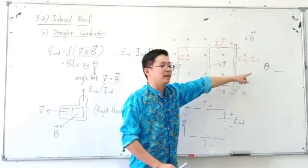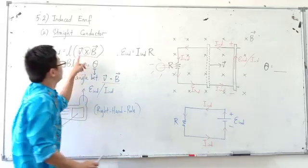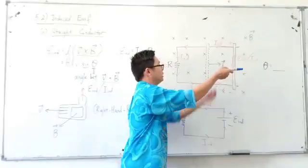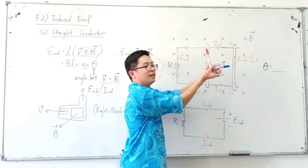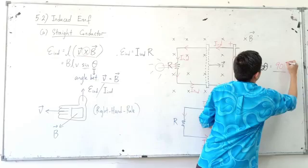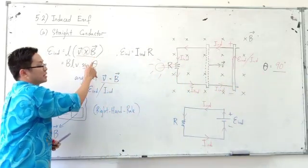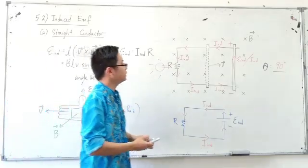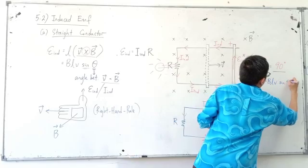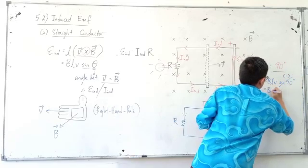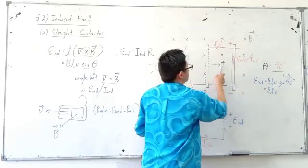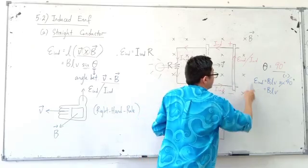About the angle theta for this case: theta is the angle between V and B. Your velocity V is to the right, and your magnetic field B is into the page. So the angle between them is 90 degrees. Therefore, sin 90 equals 1, and the formula simplifies to: induced EMF equals B times L times V. You substitute the magnetic field value, the length of the straight conductor, and the velocity of the conductor to calculate the induced EMF.